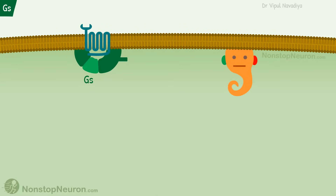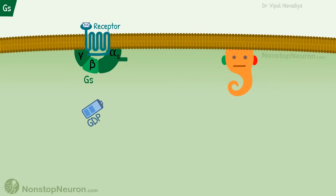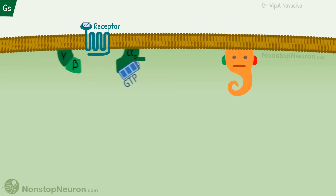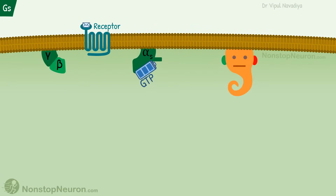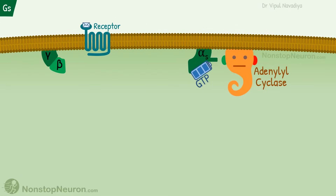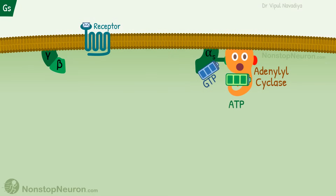First, let's see the pathway involving Gs. Gs protein consists of alpha-S, beta, and gamma subunits. Under resting state, the trimer of these subunits is associated with the receptor and the alpha subunit is bound to GDP. The binding of a ligand with the receptor causes conformational changes in the receptor and G protein that leads to release of GDP and binding of GTP. This in turn causes dissociation of the alpha subunit and the beta-gamma complex. The alpha subunit then travels along the membrane and goes to adenylyl cyclase, which is a membrane-bound enzyme facing the cytosol.